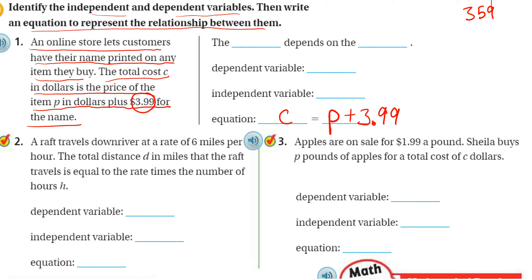So now I can see very easily that the cost of this item depends on the item that I choose. So the cost, C, is my dependent variable,